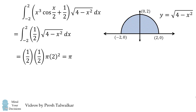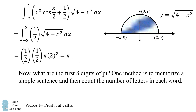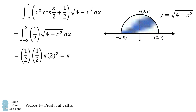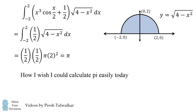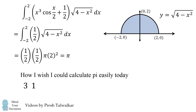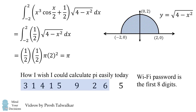So that's the answer. To get the Wi-Fi password, we need to know the first eight digits of pi. One method is to memorize a simple sentence and count the number of letters in each word. The sentence is: 'How I wish I could calculate pi easily today.' Counting the letters in each word gives: 3, 1, 4, 1, 5, 9, 2, 6, 5. The Wi-Fi password is the first eight digits — and that's our answer.